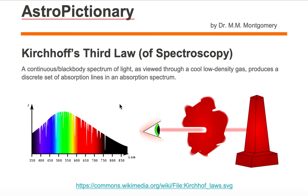Let's take a look at this definition and break it down. First of all, let's start with a continuous slash black body spectrum of light. That's this object over here on the far right — it is a hot dense object from Kirchhoff's first law. So a hot dense object will emit a continuous black body spectrum, which is what you see here: the reds, the yellows, the greens, the blues, the indigo, violet. It's continuous — one smooth wavelength after another.